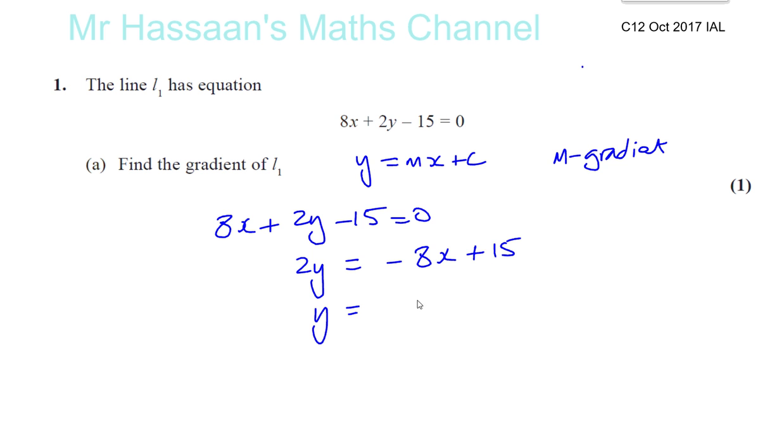Now, I'm not going to divide by 2 like one fraction. I'll divide them as separate fractions. So it will be minus 8x over 2 plus 15 over 2. So y is going to be minus 4x plus 15 over 2, which is 7.5. We can leave it as we wish. Basically, the gradient is going to be negative 4.